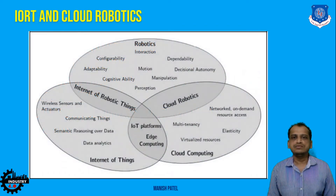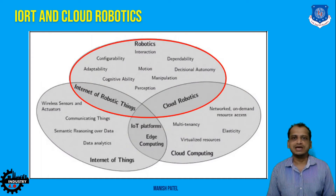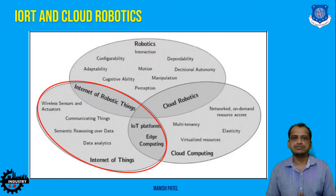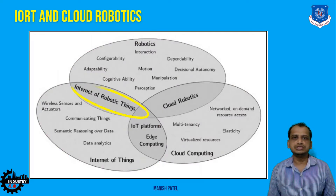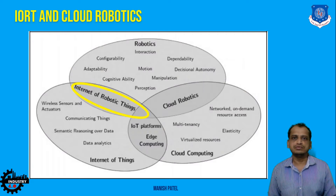Here you can see a Venn diagram of three technologies of Industry 4.0. Starting with robotics, we have all its characteristics listed, and then we have the Internet of Things which we discussed in previous lectures. When you merge these two technologies, the intersection point is the Internet of Robotic Things.